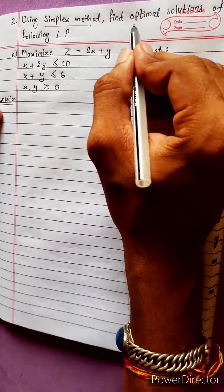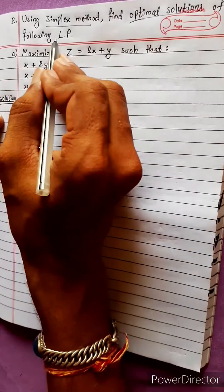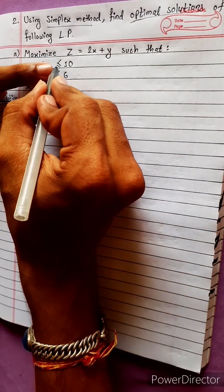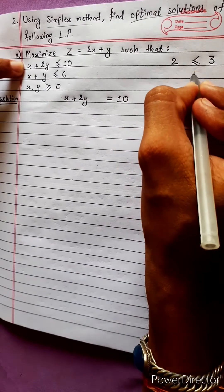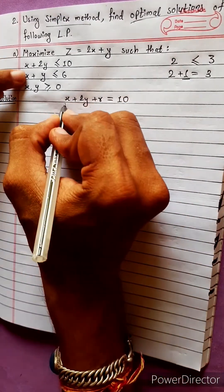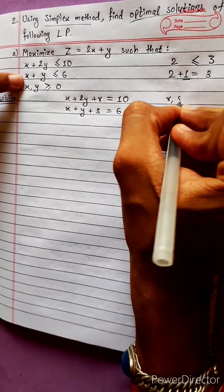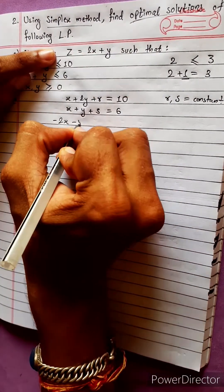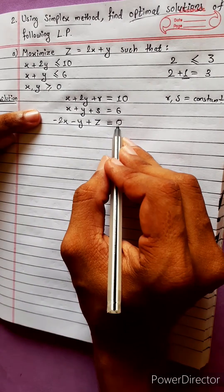Using the simplex method, find the optimal solution. The third row element is positive one; the third row element negative one, the answer is positive one. For the following linear problem, this is x plus 2y, with inequality less than or equal to. Suppose 2 and 3, this is the inequality: 2 equals to 3 plus 1. This is x plus y equals to 6. Now x, y are constant numbers. Minus 2x minus y plus z equals to 0. This is the standard form.